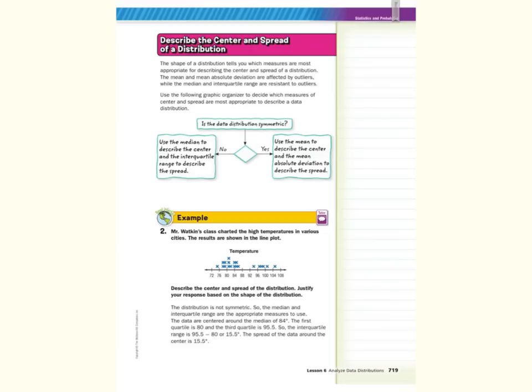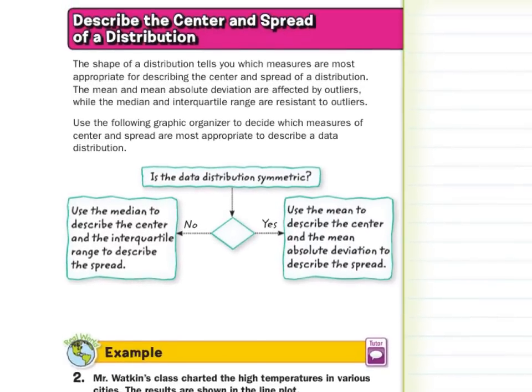Next, we are going to look to describe the center and spread of a distribution. The shape of a distribution tells you which measures are most appropriate for describing the center and spread of a distribution. The mean and mean absolute deviation are affected by outliers, while the median and interquartile range are resistant to outliers. So use the following graphic organizer to decide which measures of center and spread are most appropriate to describe a data distribution. We're going to ask ourselves, is the data distribution symmetric? If no, we're going to use the median to describe the center and the interquartile range to describe the spread. If our answer to is the data distribution symmetric is a yes, we're going to use the mean to describe the center and the mean absolute deviation to describe the spread.